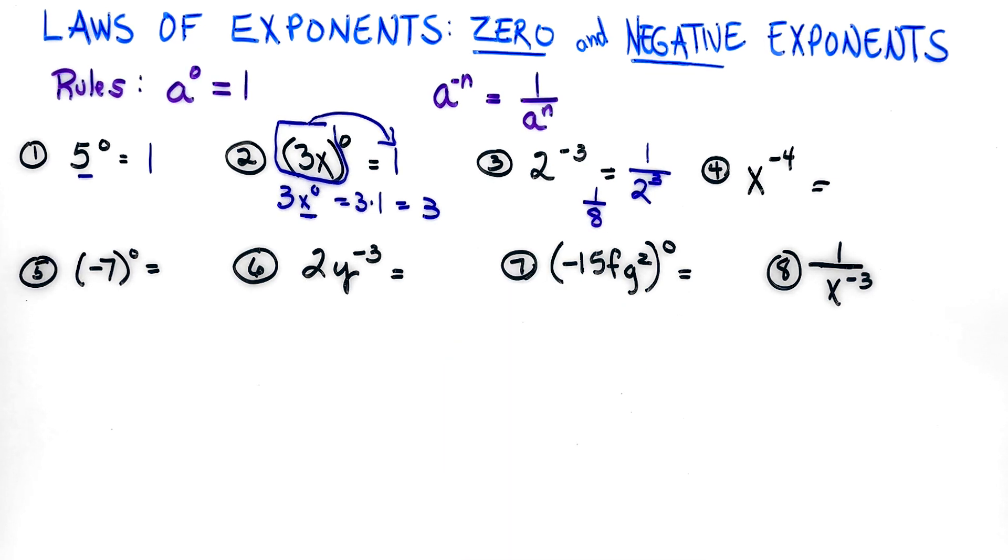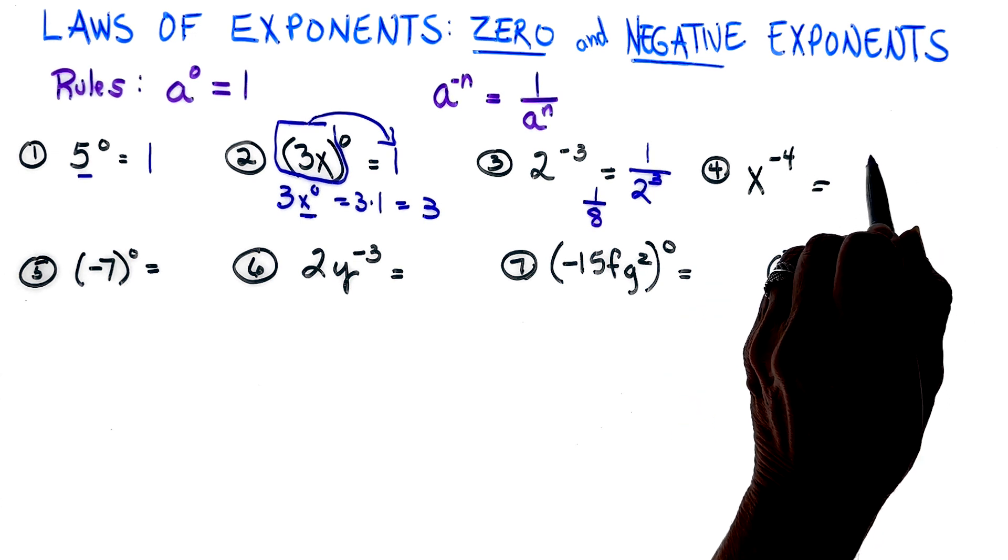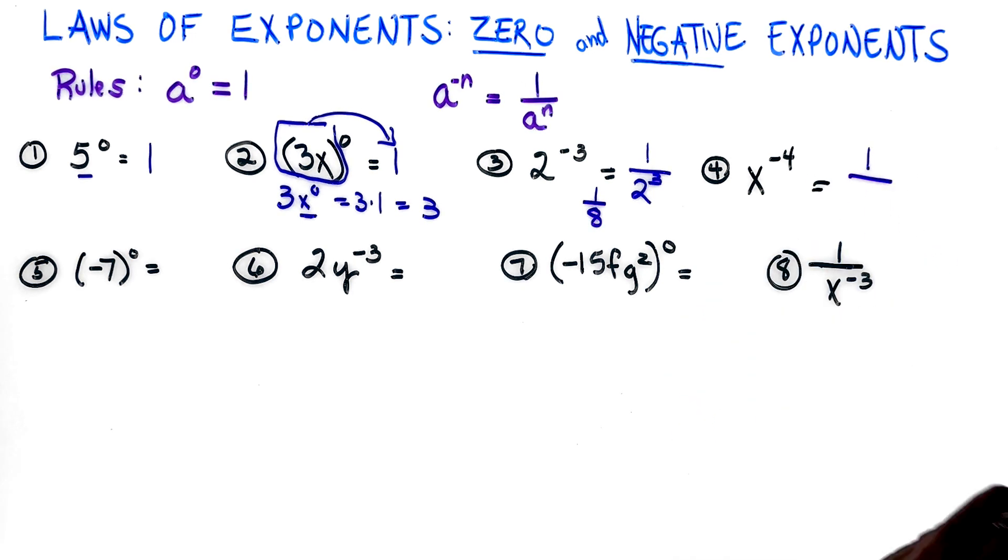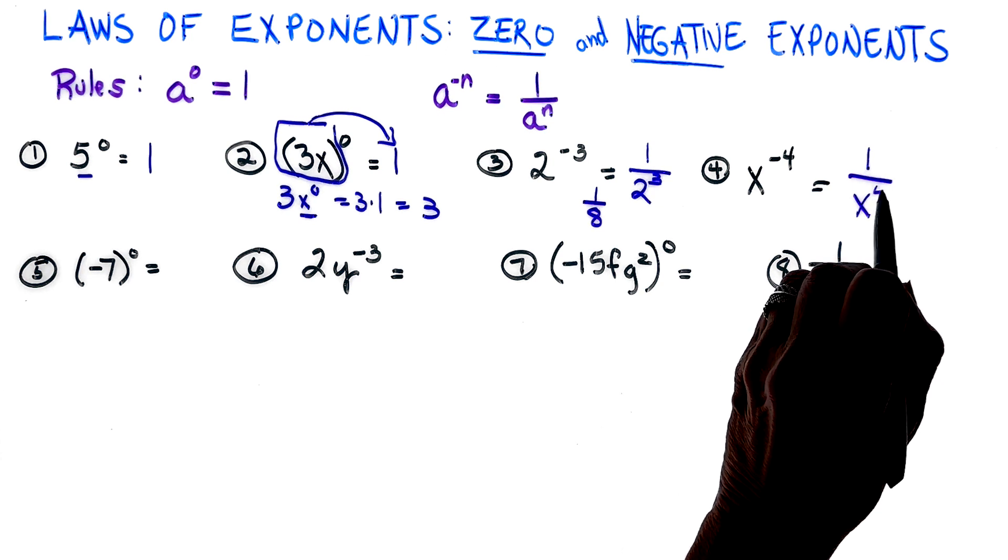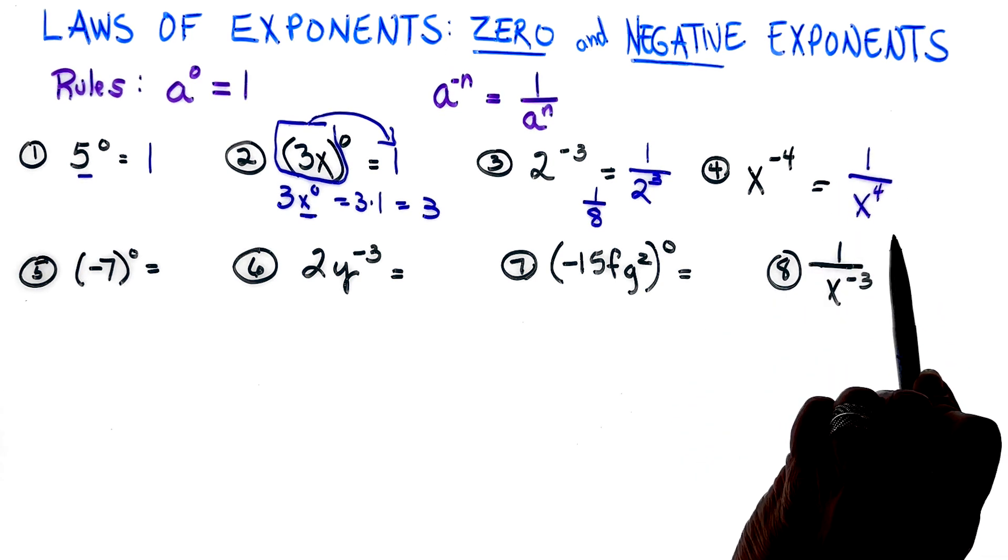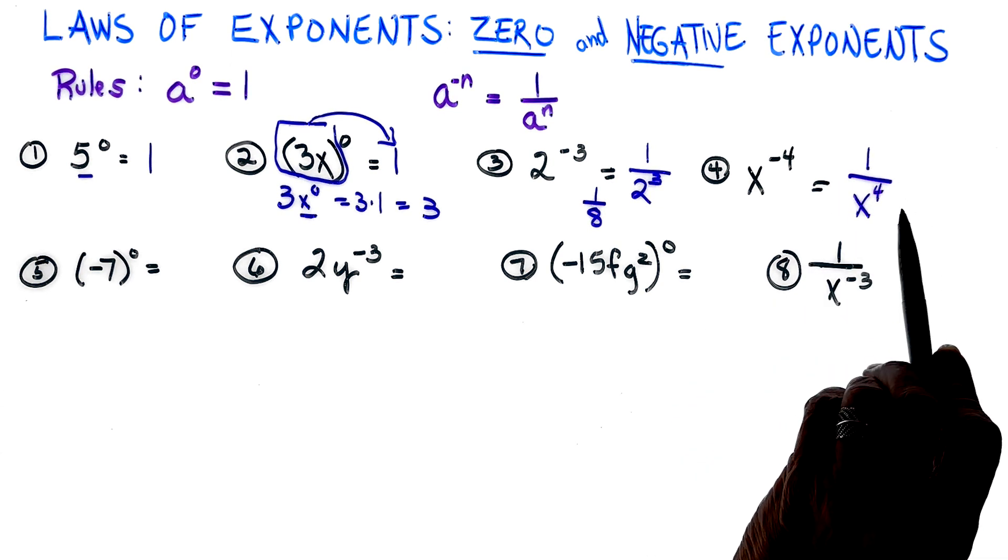For number four, x to the negative four, I'm going to write my numerator as one and write x to the fourth. Again, when it becomes a denominator, the exponent is positive.